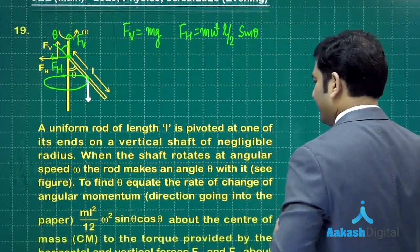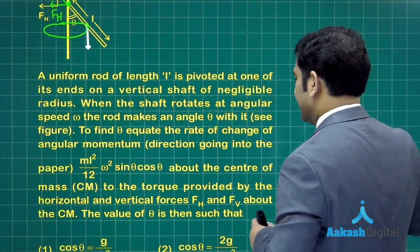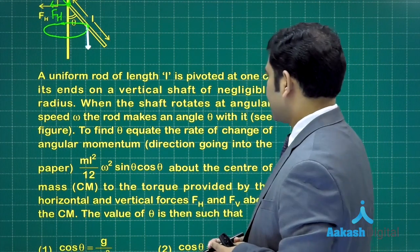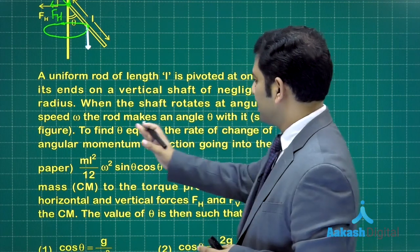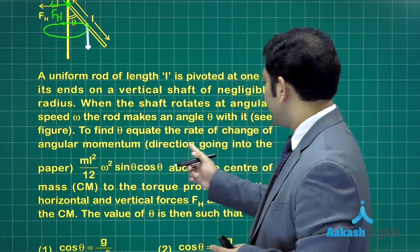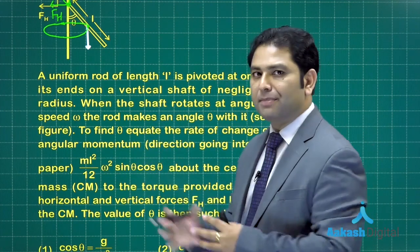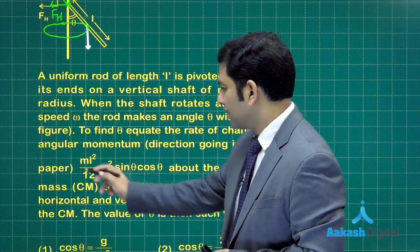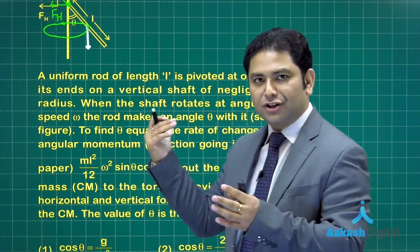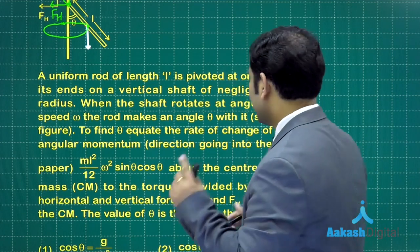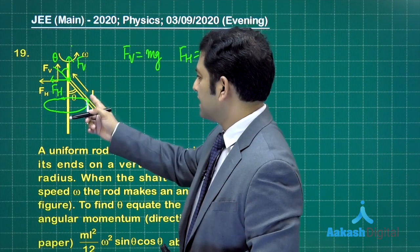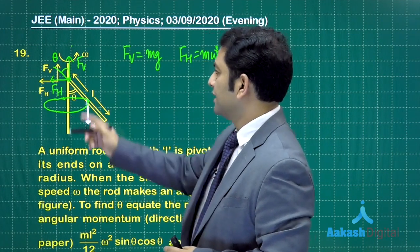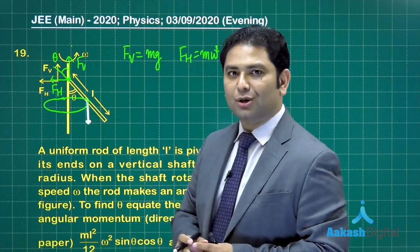The torque about the center of mass would be generated only by FV and FH. Just be very careful - it says to find theta by equating the rate of change of angular momentum. The direction is going into the paper, so you need to be very careful.